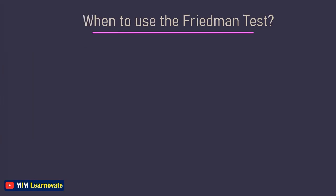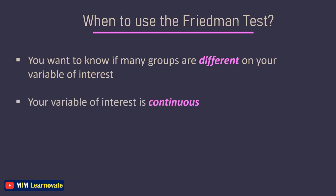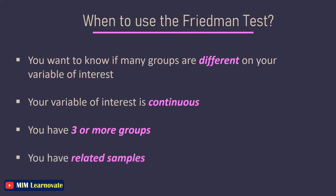You should use the Freedman Test in the following scenarios: when you want to know if many groups are different on your variable of interest, when your variable of interest is continuous, when you have 3 or more groups, and when you have related samples.